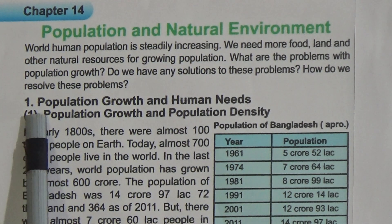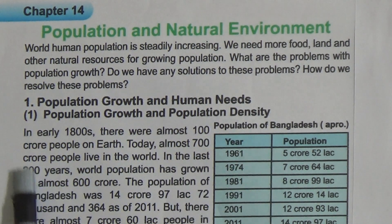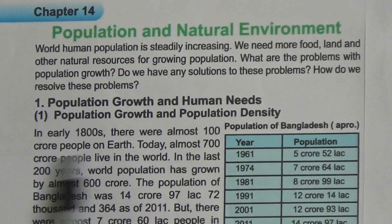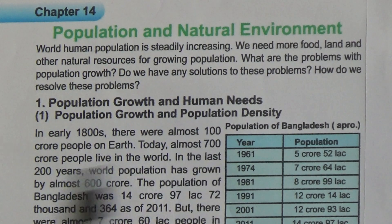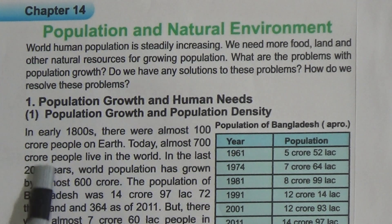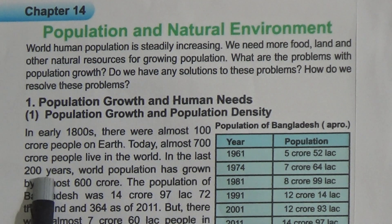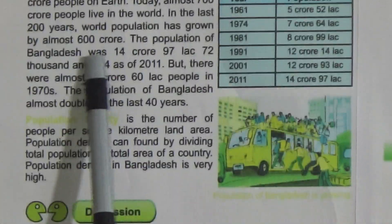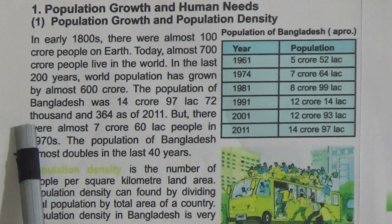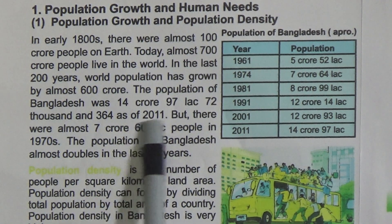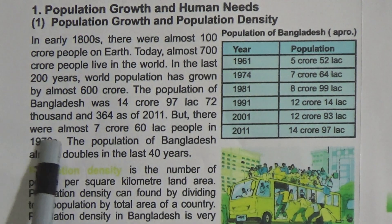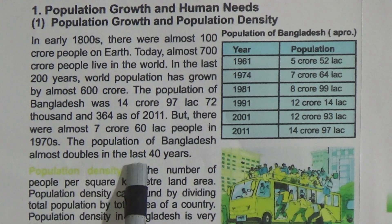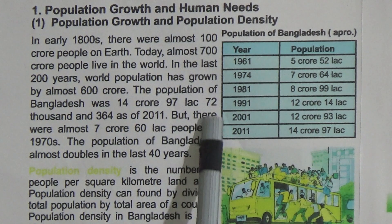The first lesson is population growth and population density. In the early 1800s, there were almost 100 crore people on Earth. Today there are almost 700 to 800 crores living in the world. In the last 200 years, world population has grown by about 600 crore. The population of Bangladesh was 14 crore 97 lakhs in 2011, but there were almost 7 crore 60 lakhs people in 1970. The population of Bangladesh has almost doubled in the last 40 years. Here you can observe the chart showing how the population is increasing.